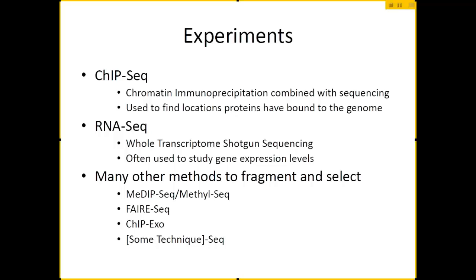Just as a quick overview, ChIP-seq uses chromatin immunoprecipitation to pull out a protein of interest which has been cross-linked to some part of the fragmented DNA sample. This is used to find the locations where those proteins are bound to the genome. For RNA-seq, two of the most common things you might want to do are: figure out what a species' transcriptome is if you don't have a reference genome, or, if you already have a good idea of the transcriptome, study gene expression levels in various cell types under different conditions and how they have changed.